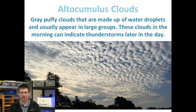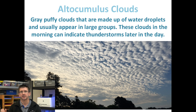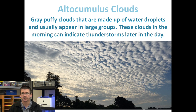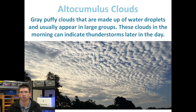Alto cumulus clouds are smaller, gray, puffy clouds made up of water droplets. Usually when we see these, we'll see them covering the whole sky — lots of small, puffy clouds. These can be an indicator of possibly rain or thunderstorms later in the day, as more of this water condenses together to make larger storm clouds.